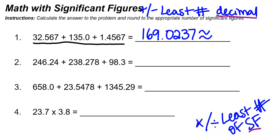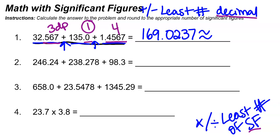Coming back to number one, all we're doing is adding, so we are looking at decimal places. I go through and count how many decimal places each value has: the first value has three decimal places, the second has one decimal place, and the third has four decimal places. The least number of decimal places is one, so I round my answer to one decimal place. 169.0237 — two is less than five, so it stays a zero. My final answer is 169.0.